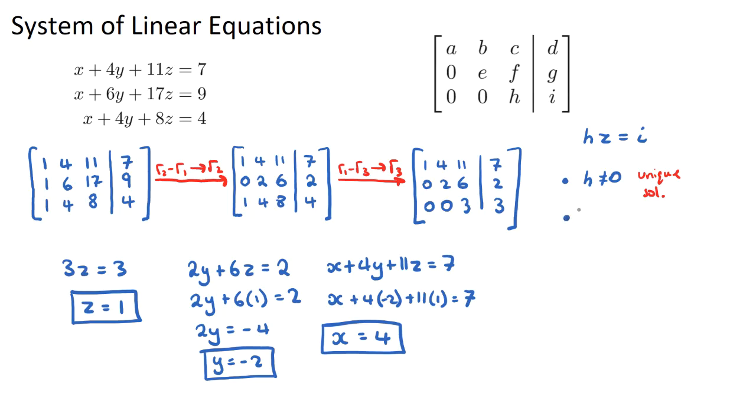The second one is, if h is 0 and i is not 0. So if this is 0, but i is not 0, let's think about what will happen here for z. We're going to get some value for i, which isn't 0. But then we're going to be dividing that by 0, when we bring the h underneath. And that's not going to give us an answer, because we can't divide by 0. It's not going to give us a real solution. So if this is the case, where this is 0 but this isn't, we're going to get no solution to our system of equations. So this will be no solution.